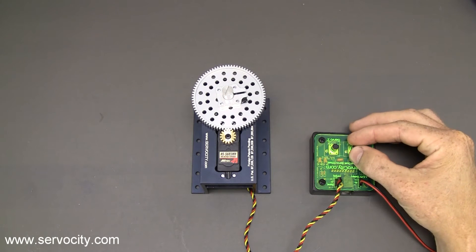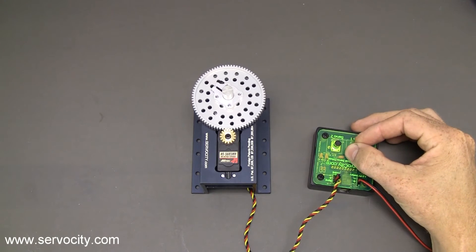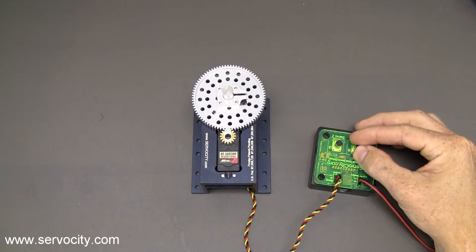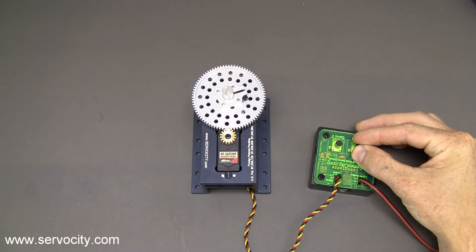If I rotate it a little bit, it's going to rotate a little bit. If I rotate it fast, it mimics the rotation of the knob. And if I rotate the knob slowly, it'll do the same.